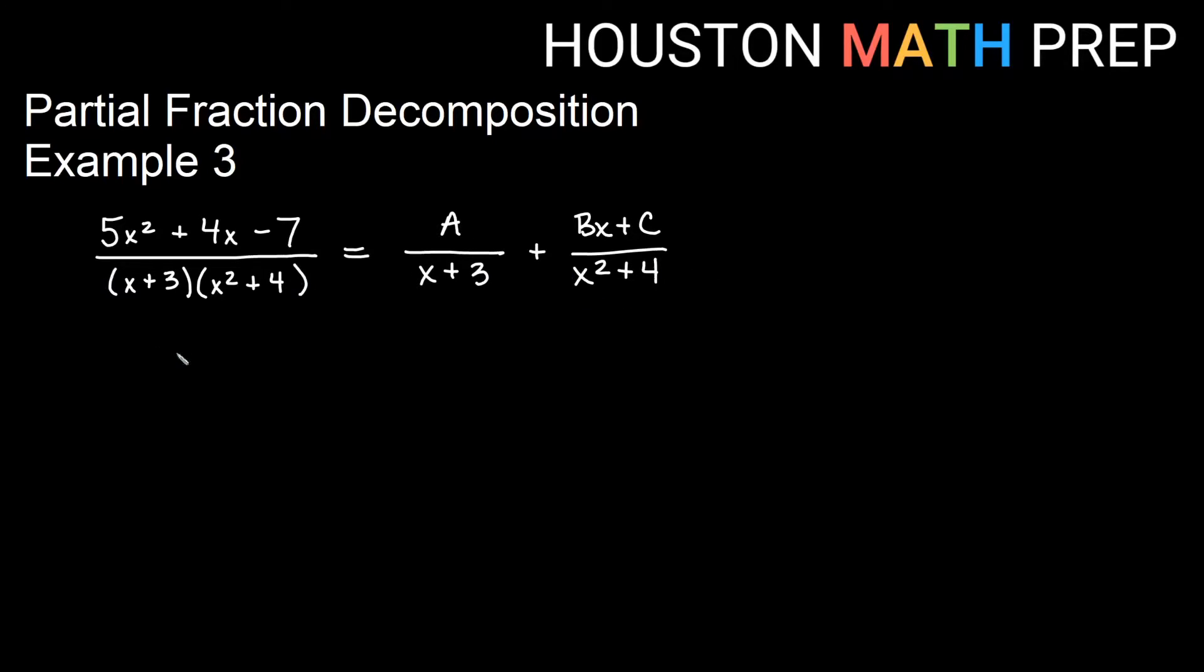Now when we're multiplying to get a common denominator we wouldn't change the first one at all. So we'll keep 5x squared plus 4x minus 7. If I were getting a common denominator I would multiply the A fraction on the top and the bottom by x squared plus 4. If I were multiplying the Bx plus C fraction to get a common denominator I would multiply the top and bottom by x plus 3. And remember we only solve the tops anyway so I'm not going to write all of the denominators under these, we'll just solve this anyway.